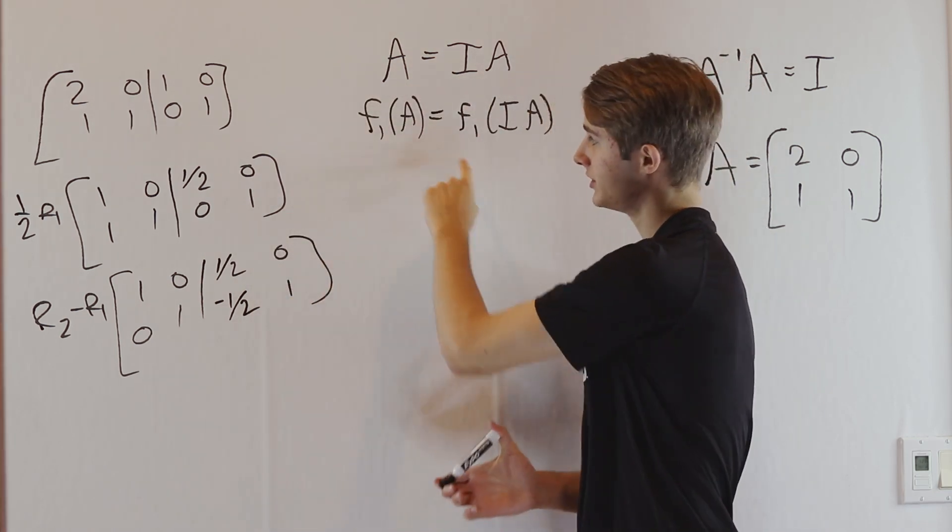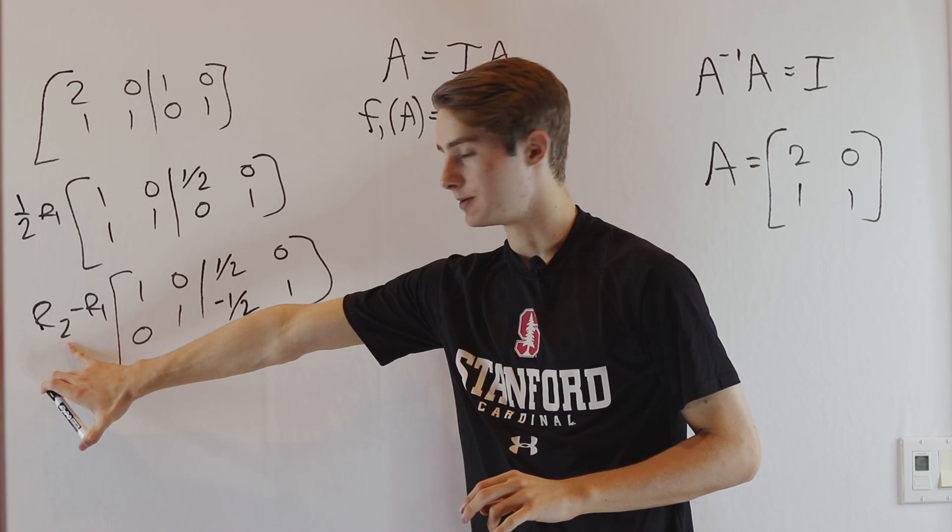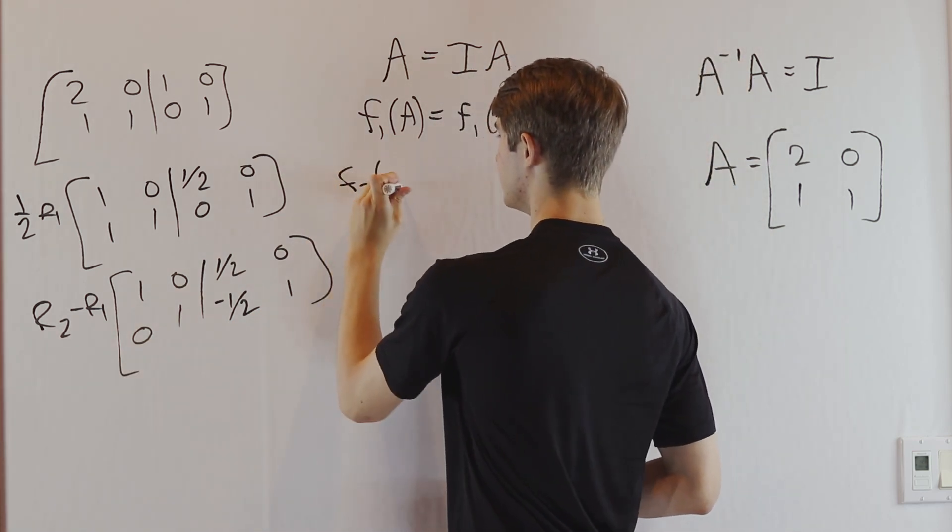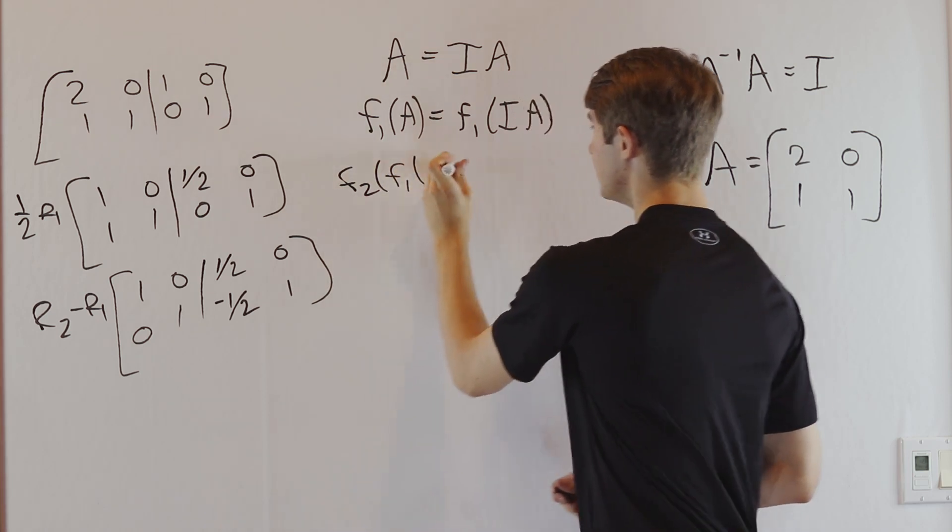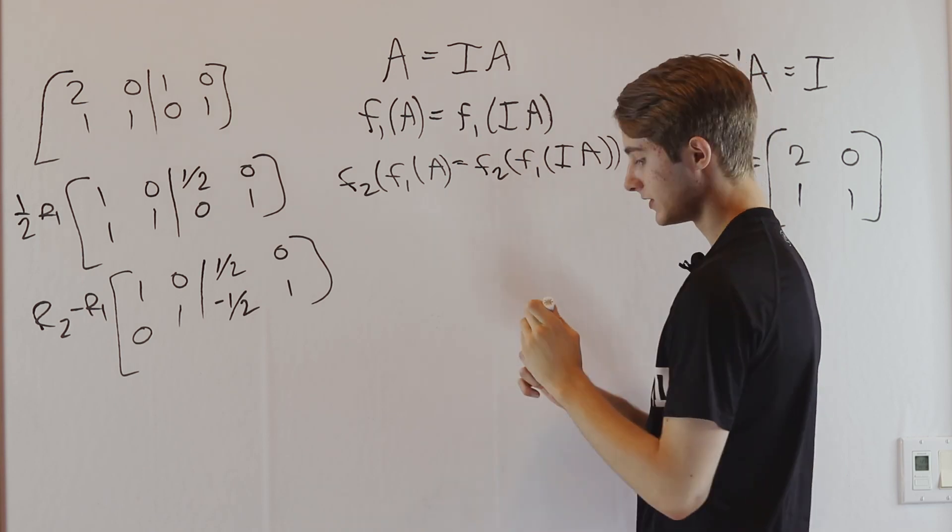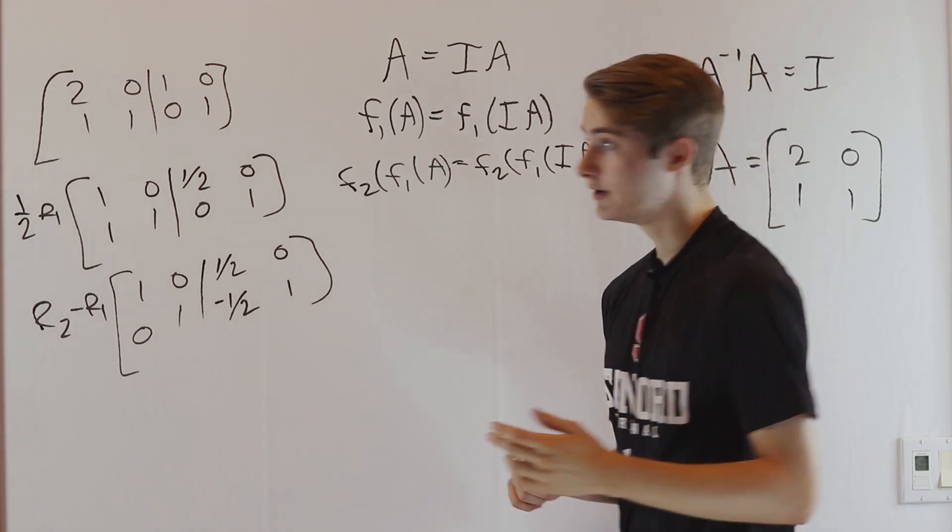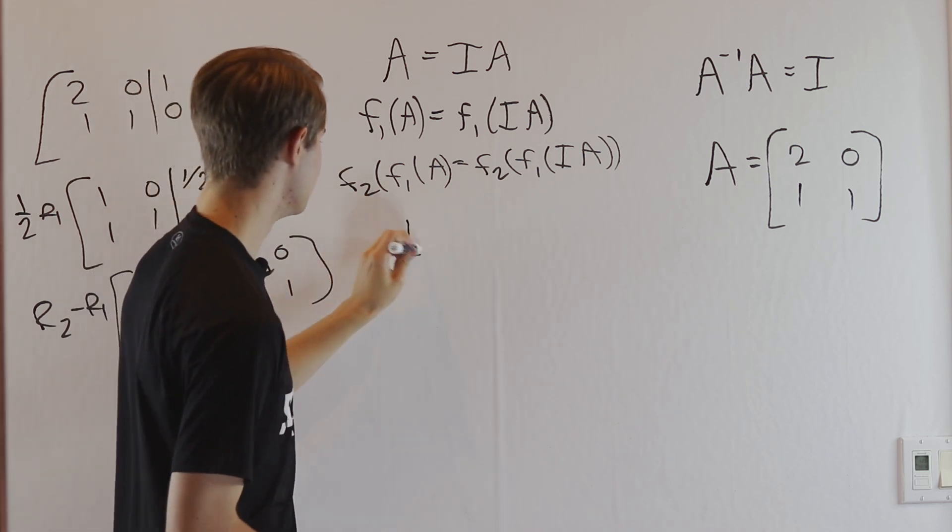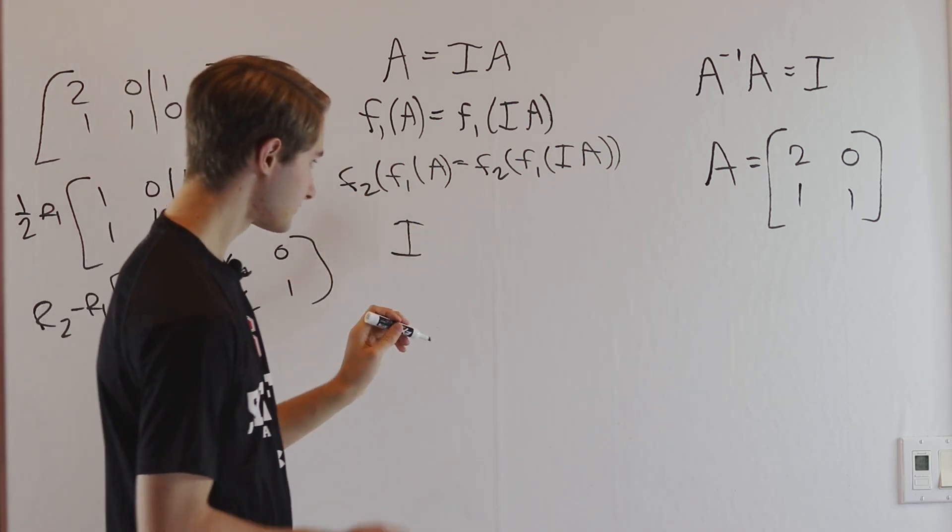We express this in our equation. We can write this row operation as f₂, our second function. So f₂(f₁(A)) = f₂(f₁(I)A). What we know now is that f₂(f₁(A)) equals the identity.